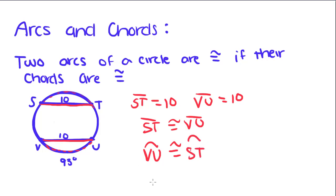If arc VU equals 93, then ST also has to equal 93. Now that we know that, we're going to take it one step further.